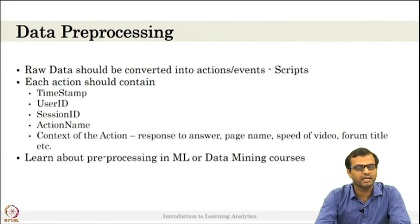Each action should contain timestamp, user ID, session ID, also what is the action name - is it seek video, is it scrolling, is it discussion forum creation, is it deletion of discussion forum - and context of the action. For example, in seek video we saw start time, end time, the duration of seek. Or if it is a question-answer response to the answer, what answer did the student enter. If it is a reading page, what is the page name being read, speed of the video if they're watching the video. If it is in the forum, what is the title of the forum. This kind of information should be captured in the context of the action.